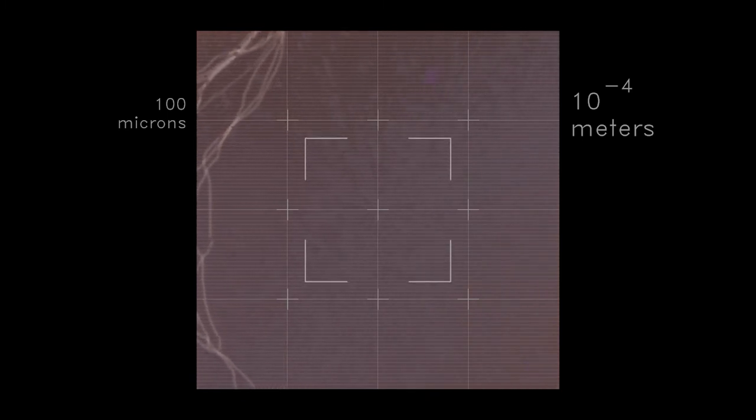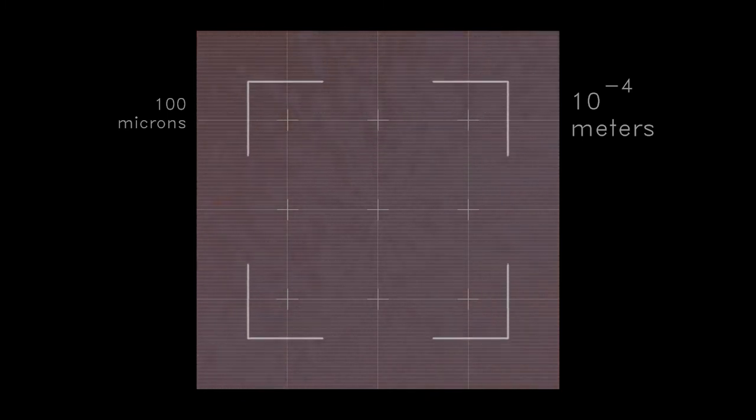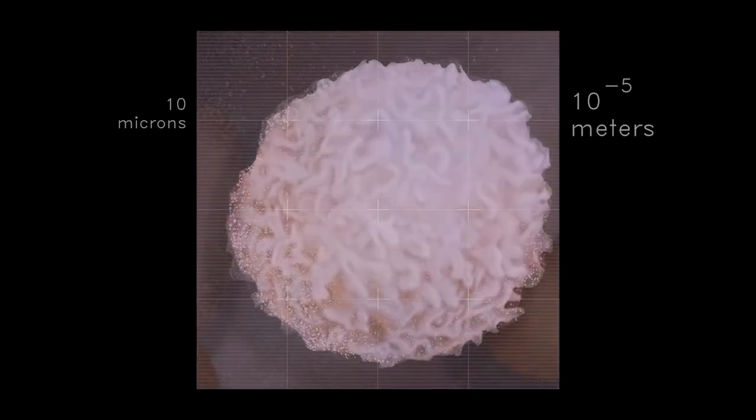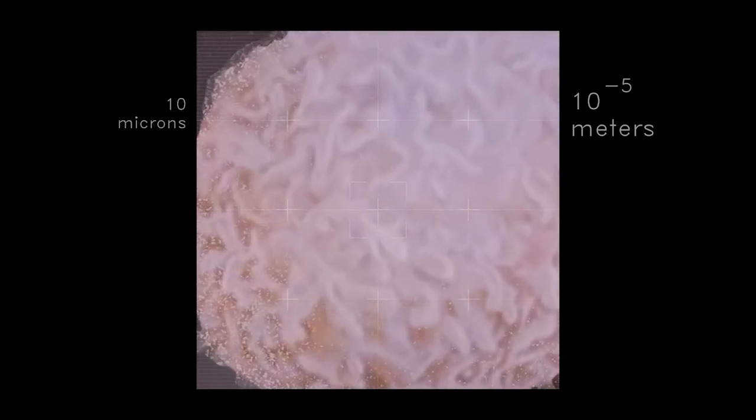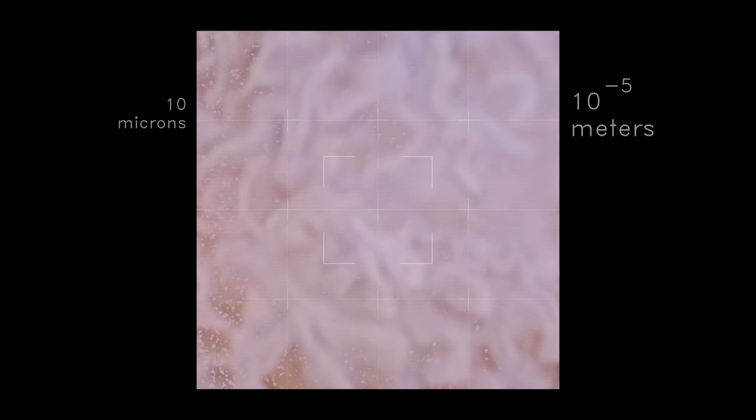We enter the white cell among its vital organelles. The porous wall of the cell nucleus appears. The nucleus within holds the heredity of the salmon in the coiled coils of DNA.